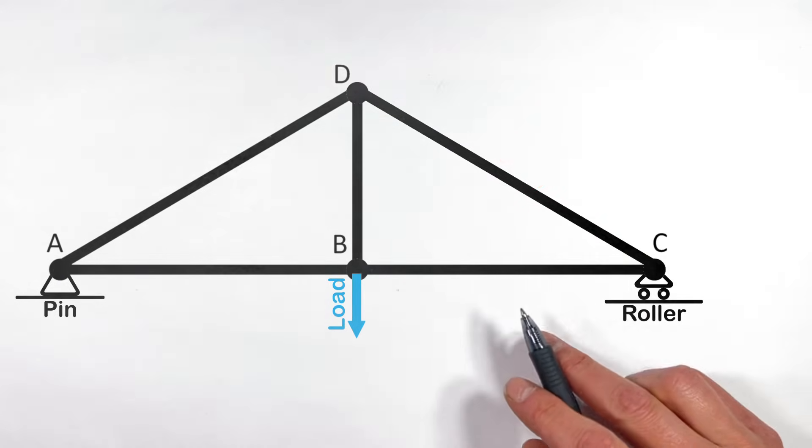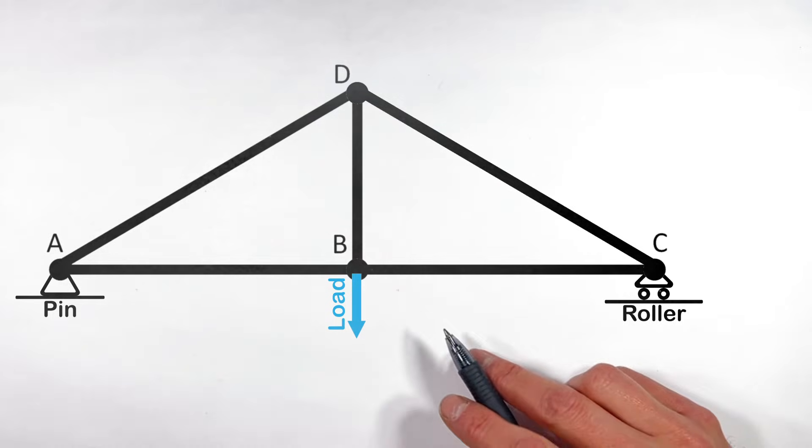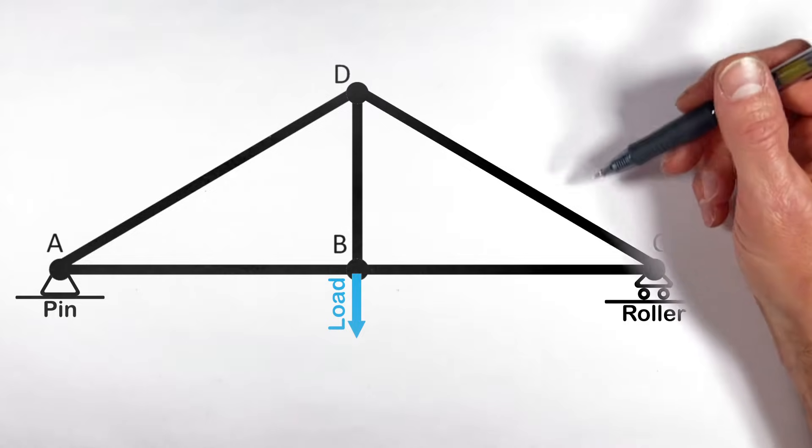Now to determine whether a truss member is under tension or compression, what I want to do is look at what would happen to the entire truss if we were to remove that truss member.